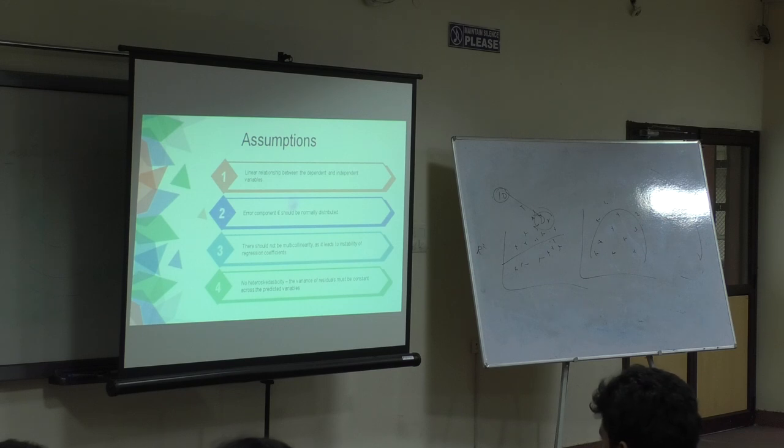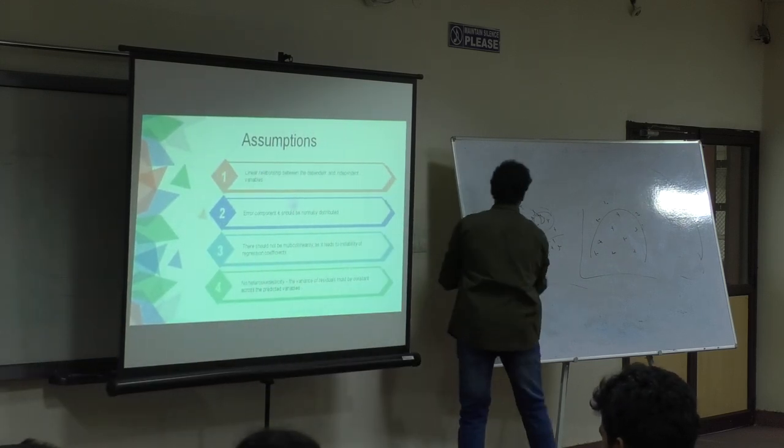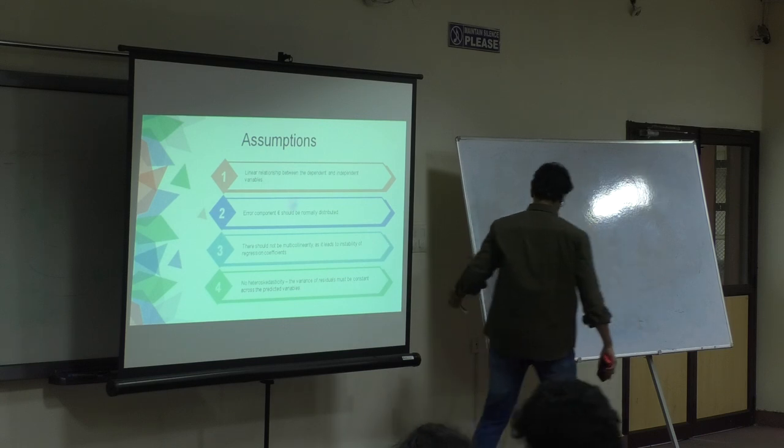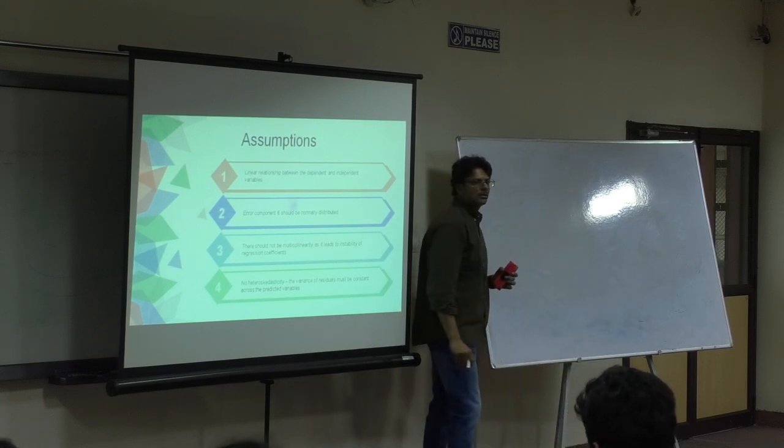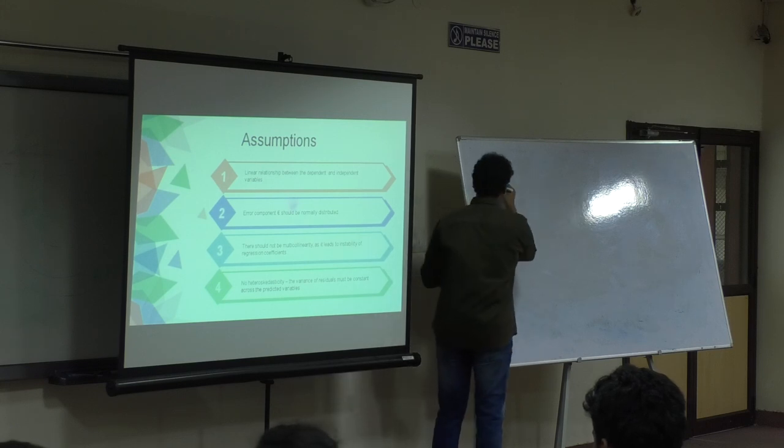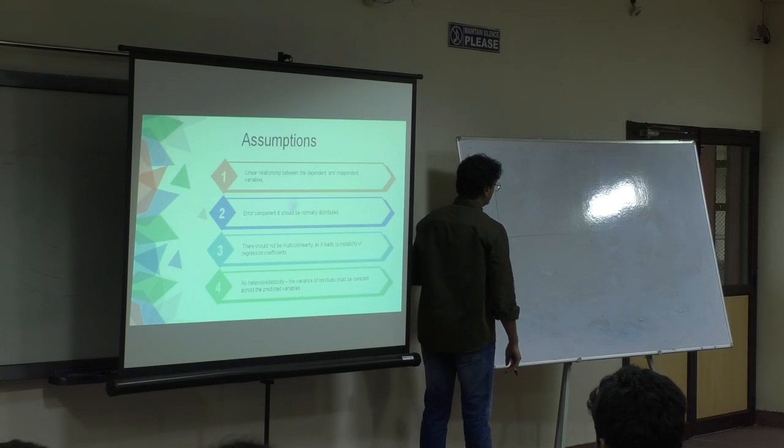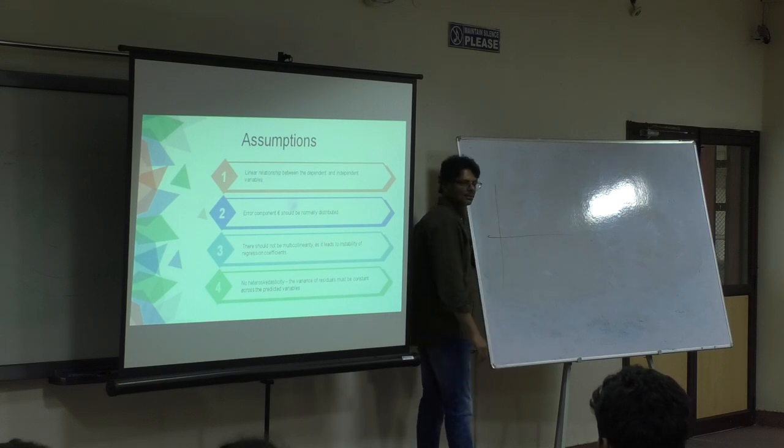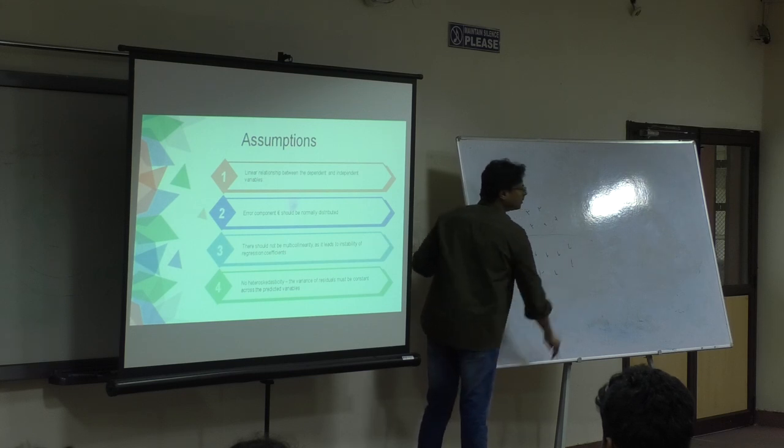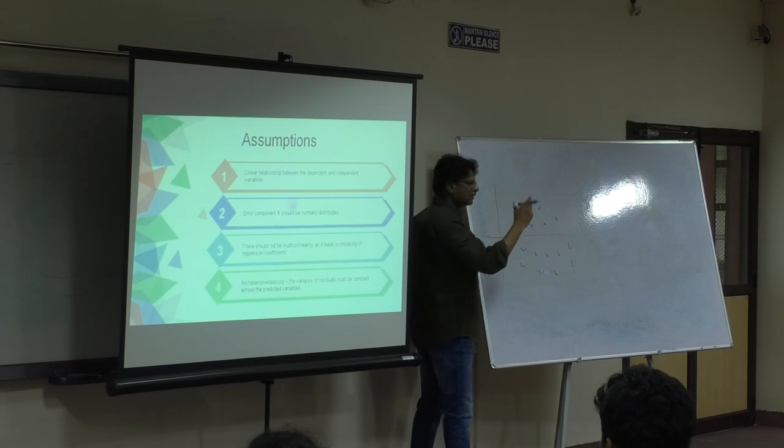No heteroscedasticity. Have you all heard this word? We have already learned what residuals are, right? That is the distance between the residuals. Now, when I draw a scatter plot of the residual distances, it should be like this. That's why that is the line of best fit, right?